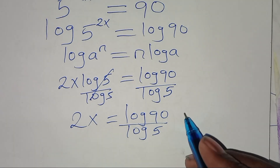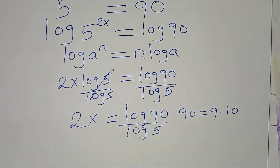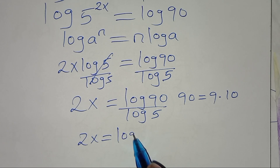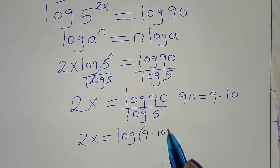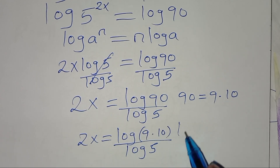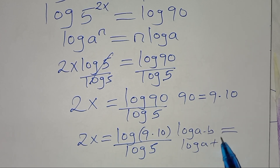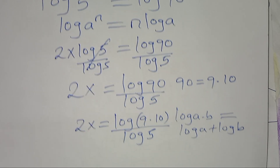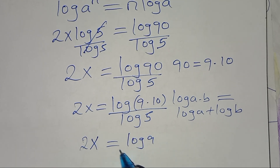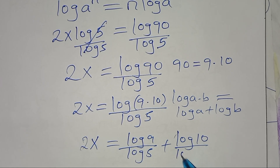The next step: we can express 90 as 9 multiplied by 10. Substituting this, we have 2x equal to log of 9 times 10, divided by log 5. Now log of 9 times 10 is in the form of log(a times b), which we can express as log a plus log b. Applying this logarithm property, we find that 2x is equal to log 9 divided by log 5 plus log 10 divided by log 5.